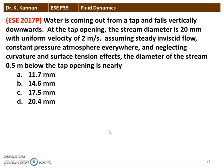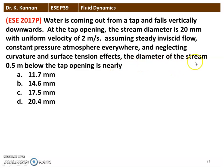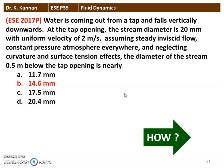The next question is from the 2017 question paper. Water is coming out from a tap and falls vertically downward. At the tap opening, the stream diameter is 20 millimeters with a uniform velocity of 2 meters per second. Assuming steady inviscid flow, constant atmospheric pressure everywhere, and neglecting curvature and surface tension effects, the diameter of the stream 0.5 meters below the tap opening is nearly 14.6 millimeters.